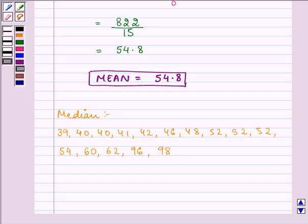Now here the number of observations given to us is equal to 15 and this is an odd number.